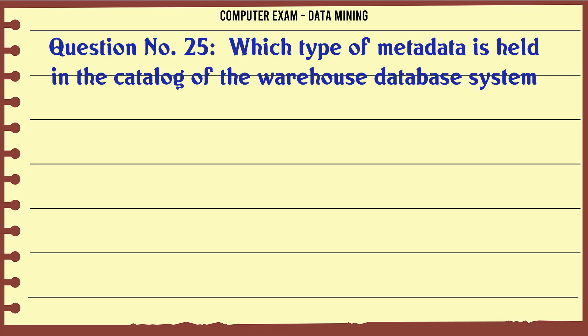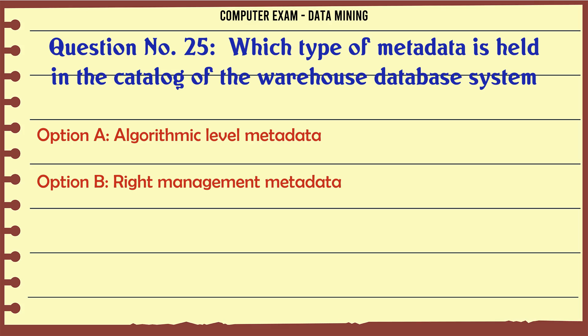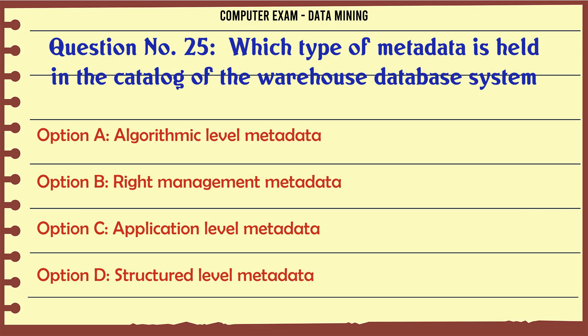Which type of metadata is held in the catalog of the warehouse database system? A. Algorithmic level metadata. B. Write management metadata. C. Application level metadata. D. Structured level metadata.